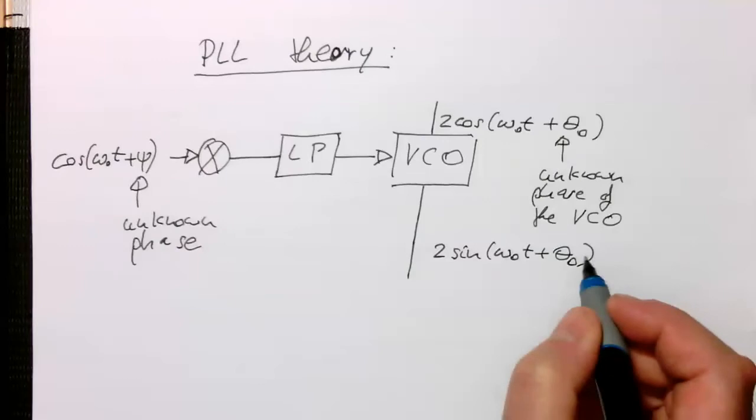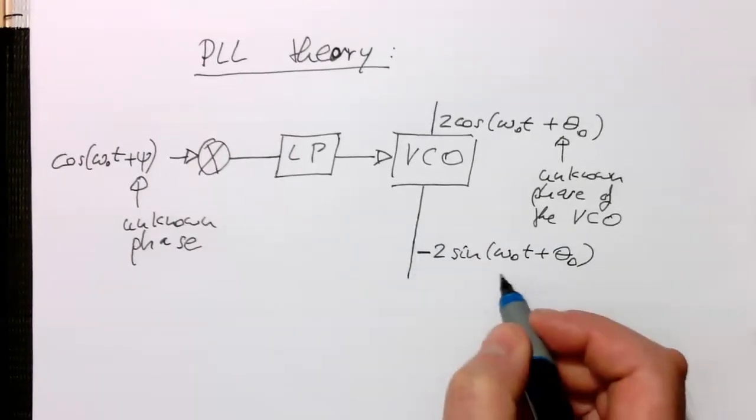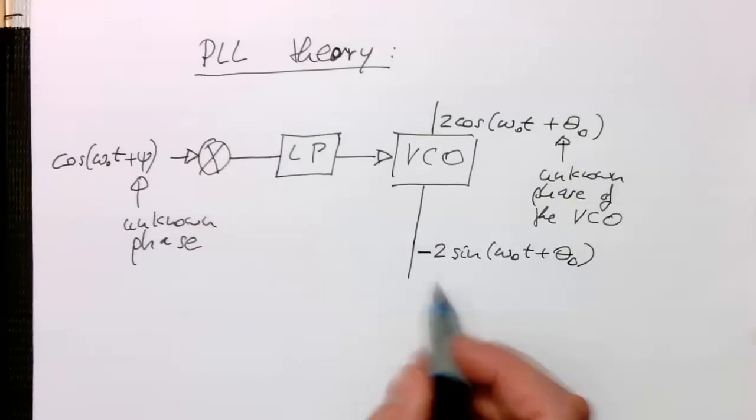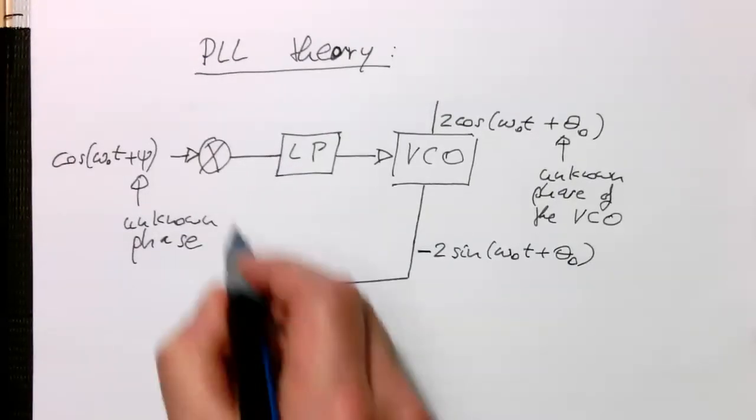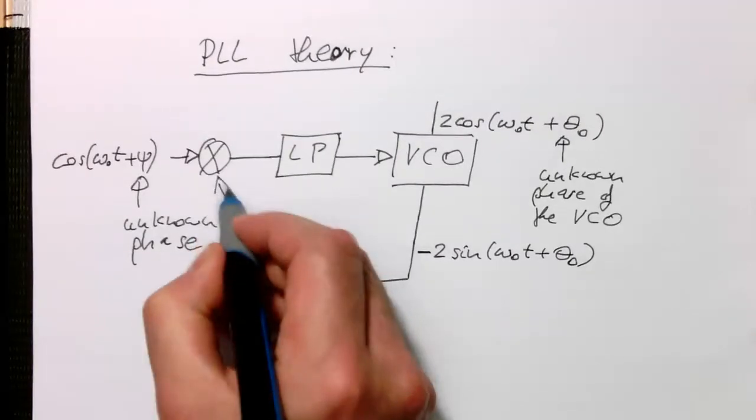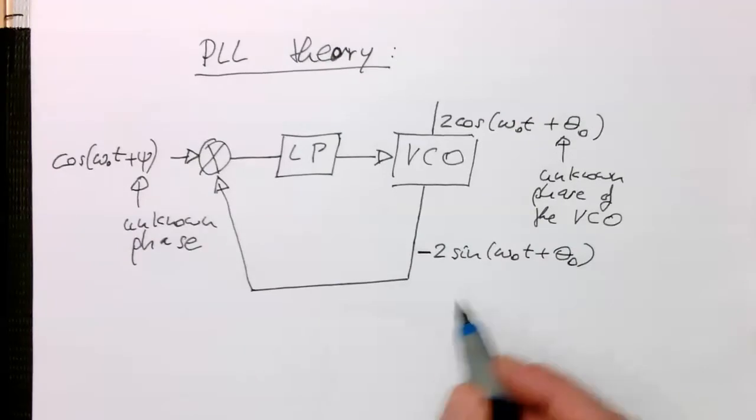And what I'm doing here is I'm adding now a negative sign here. That's important to get the PLL working. And so this signal now goes back to our multiplier here.